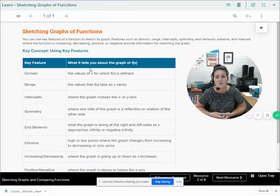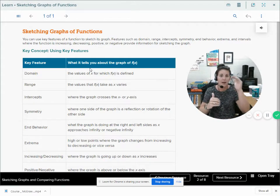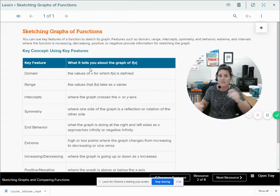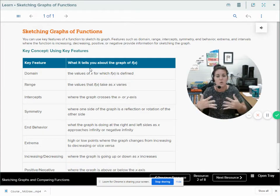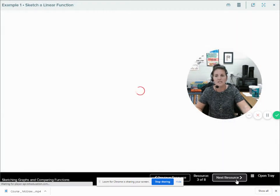So we can use the key features of a function. Those extremas, that minimum maximum value, the end behaviors, all of those different things, the domain, the range, those help us get an idea of what our graph is going to look like and then allow us to sketch it.